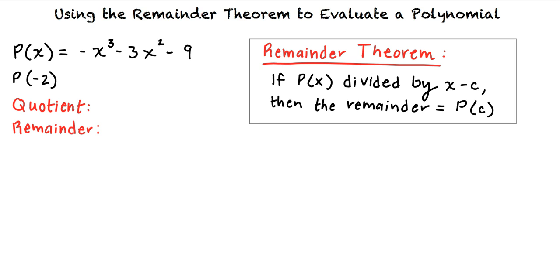How does this apply to our problem? If p of x equals negative x cubed minus 3x squared minus 9 is divided by x minus negative 2, then the remainder is p of negative 2.